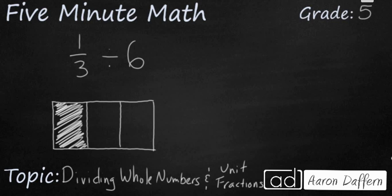So let's start with one-third divided by six. We have our unit fraction here as the dividend, and we're going to divide it with our whole number. Six is our divisor. So we have a picture of one-third, and we're going to take this one-third and divide it into six equal pieces.